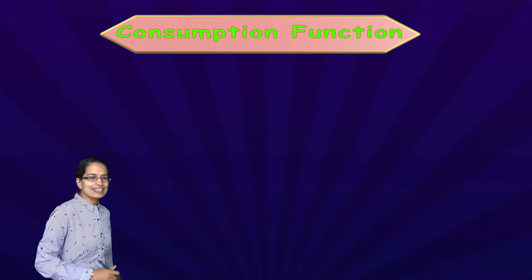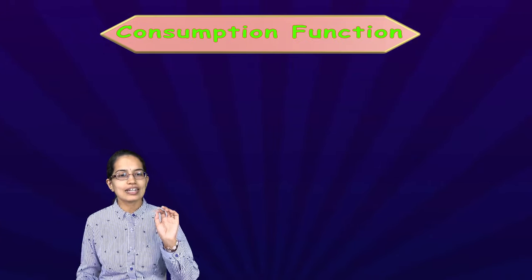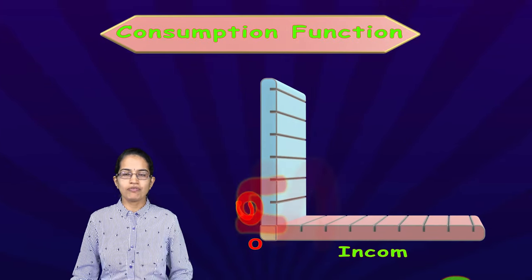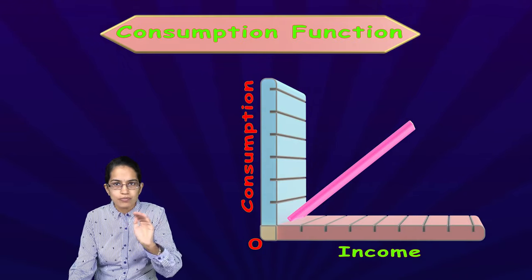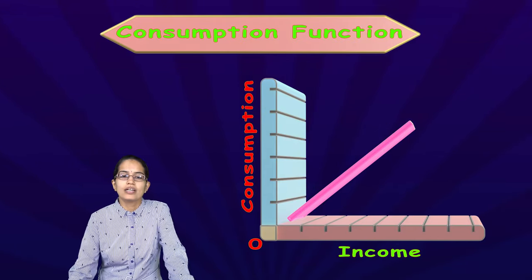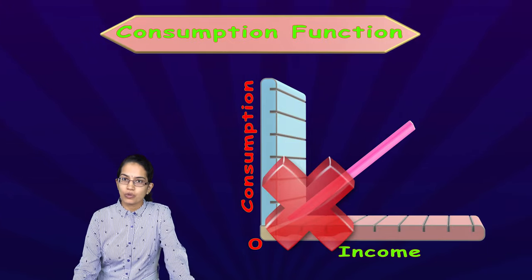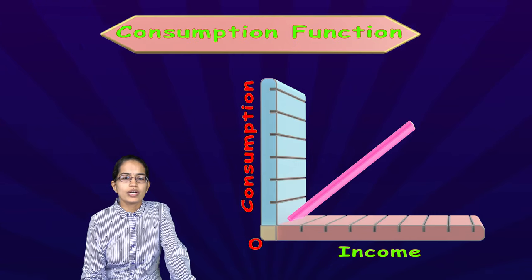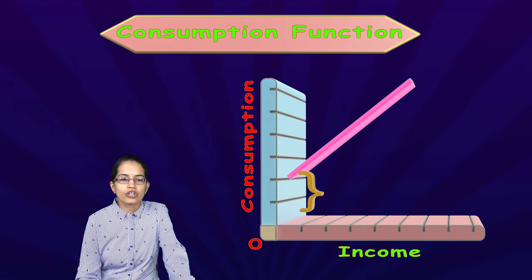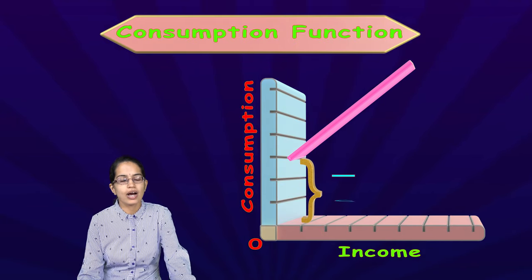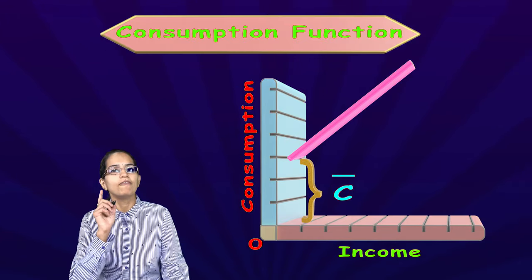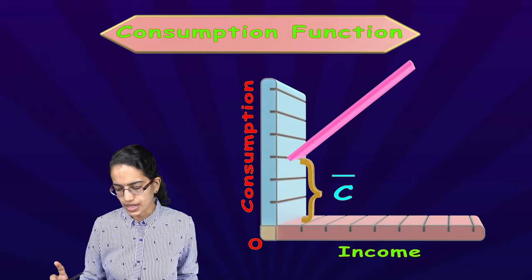On an income-consumption graph, at any point my consumption cannot be 0. I cannot draw a graph that begins at 0, because at least I am consuming something. For a consumption and income graph, there is always a basic autonomous consumption — denoted by C-bar or C-hash — and this forms the starting point of the consumption function.